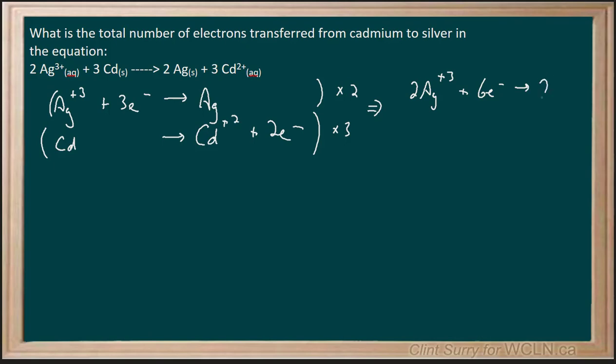giving us 2 silver. And 3 cadmium going to give us 3 cadmium ions plus 6 electrons. So the number of electrons transferred is 6 electrons.